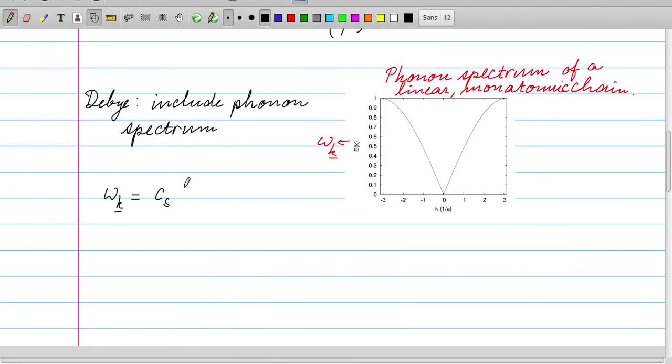This is in the isotropic limit, for long waves so that we don't see the anisotropy of the solid. For k small or omega small, this is a good approximation. So it's this approximation omega_k is c_s k which we will use in order to make progress in analyzing the specific heat of solids due to phonons.